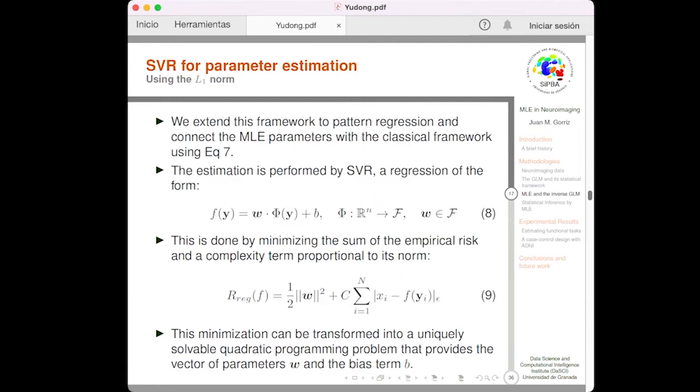In this work, we extend this framework to pattern regression and connect the machine learning parameters with the classical framework using the previous equation 7. The estimation is going to be performed by support vector regression. This is done by minimizing the sum of empirical risk and the complexity term proportional to its norm, where we employ the L1 norm. And this minimization can be transformed into a uniquely solvable quadratic programming problem that provides the vector parameters omega and the bias term b.